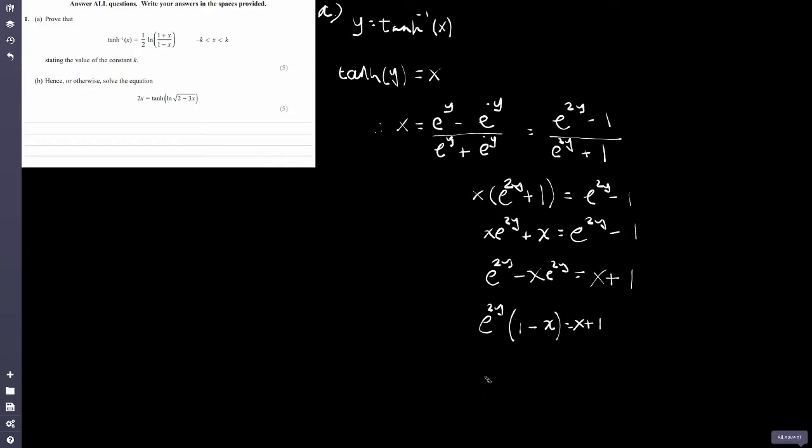And now I can divide through by 1 minus x. So e to the 2y, that's going to be equal to 1 plus x all over 1 minus x. Now I'm going to anti log. And this is looking pretty good right, we've got 1 plus x over 1 minus x, so we're nearly here now in this form. So if I anti log this now, what I'm going to get is 2y is equal to ln of 1 plus x over 1 minus x. And then finally, just divide through by 2. So therefore, y is equal to half ln of 1 plus x over 1 minus x. And there we have it. Because we said at the beginning, y is equal to the inverse of hyperbolic tan.